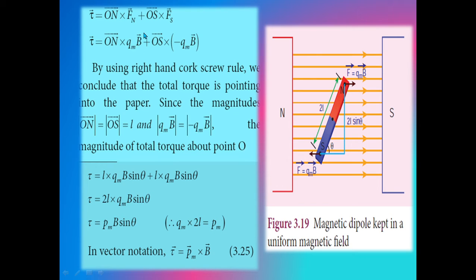We get ON vector × QmB vector + OS vector × (−QmB vector). Using the right-hand cork screw rule, we conclude that the total torque is pointing into the paper. Since the magnitude of ON vector equals the magnitude of OS vector, and O to N is L, O to S is also L, therefore |ON| = |OS| = L.